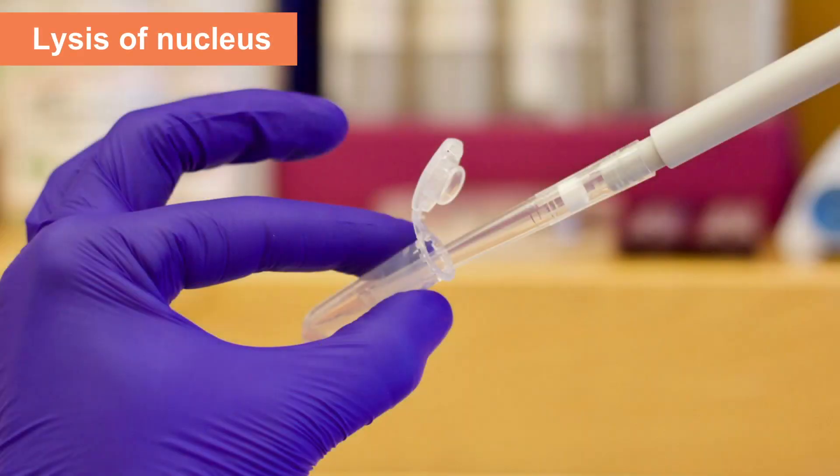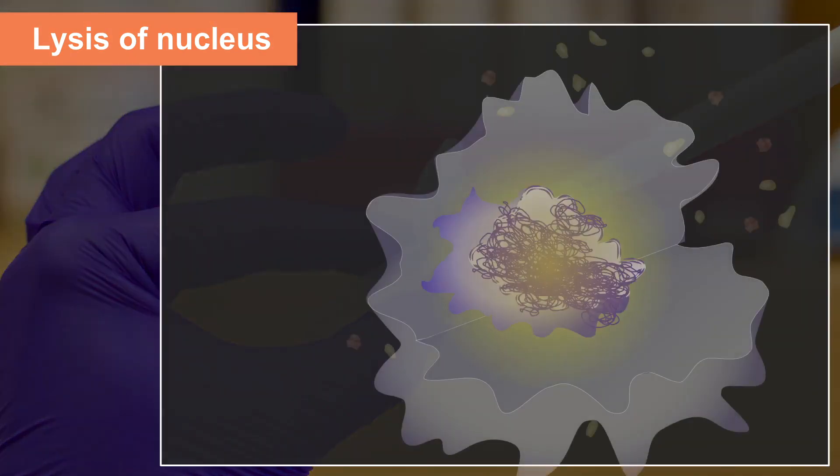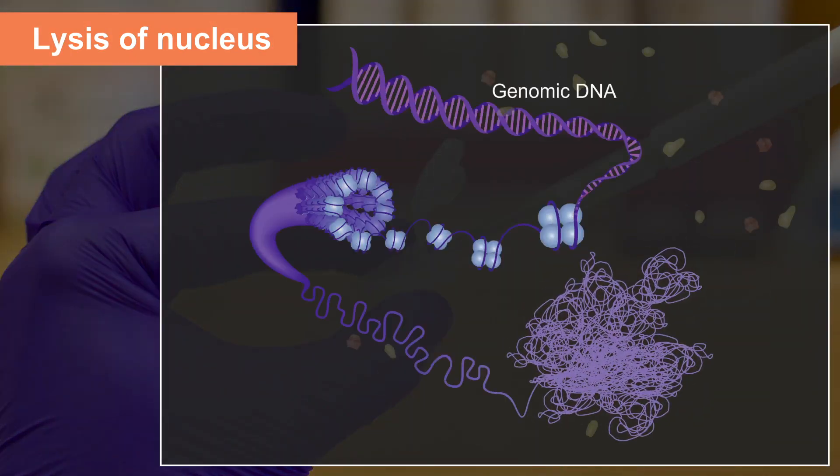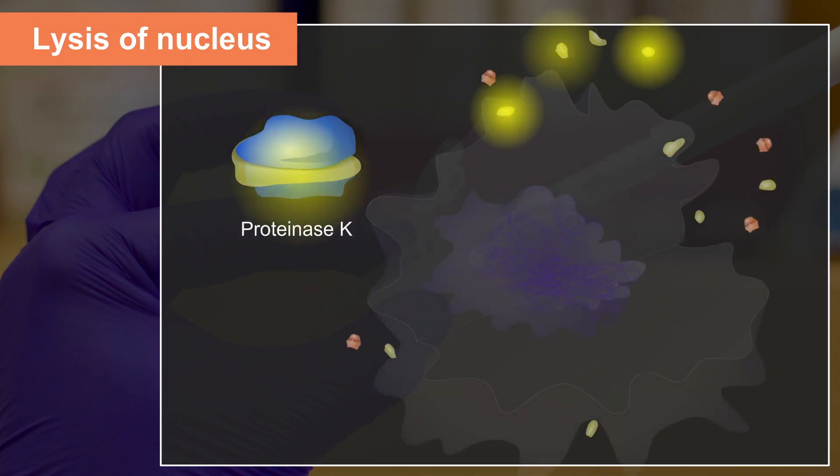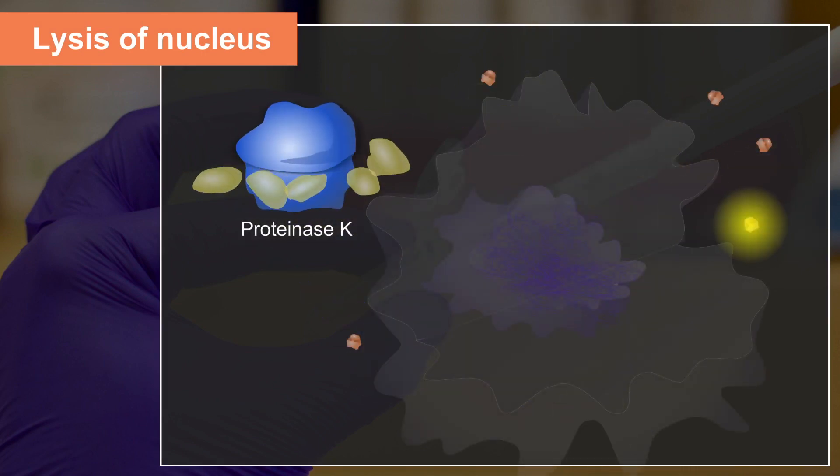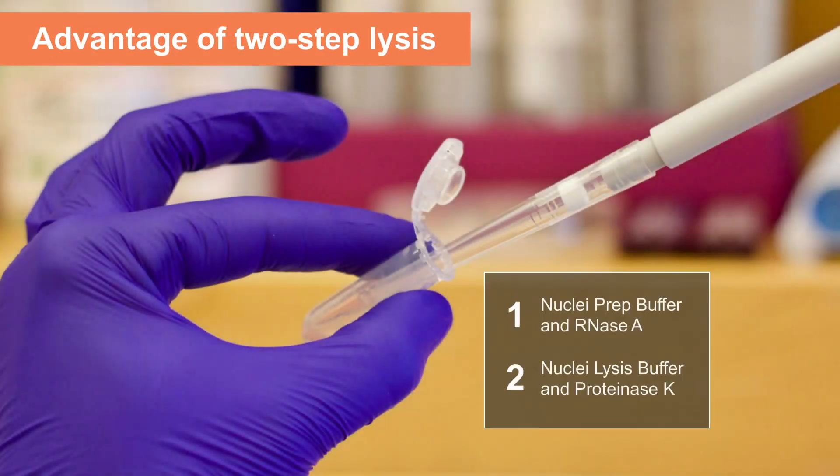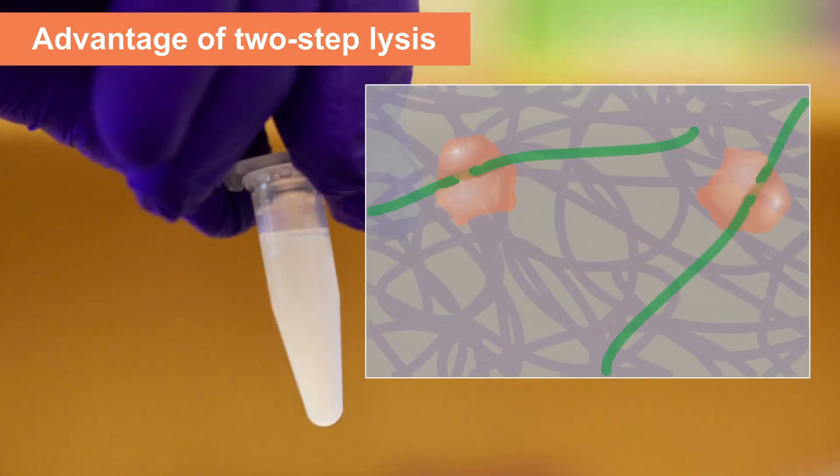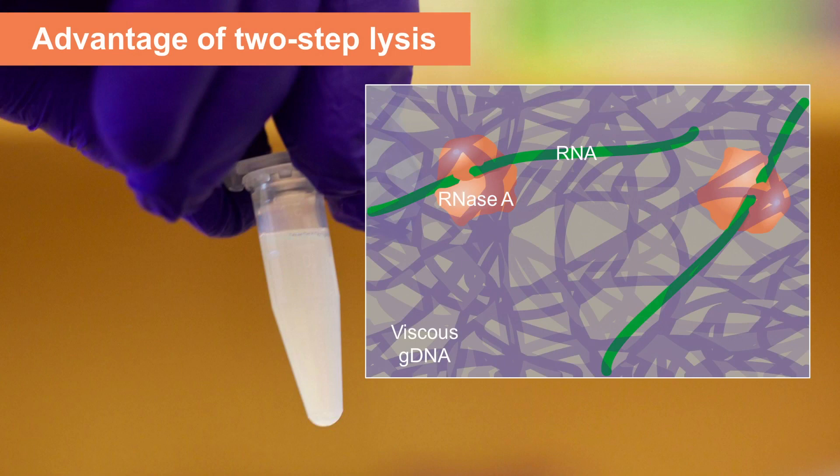Next, a mix of nuclei lysis buffer and proteinase K is added to the sample, which lyses the nuclei and releases the genomic DNA. Proteinase K digests all of the proteins, including the RNase A enzyme that has finished digesting the RNA. This two-step lysis approach allows the RNA to be digested effectively before the genomic DNA makes the environment too viscous, which would significantly reduce the effectiveness of the RNase A enzyme.